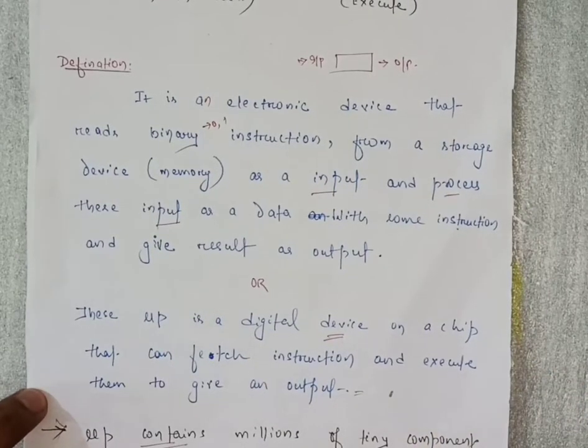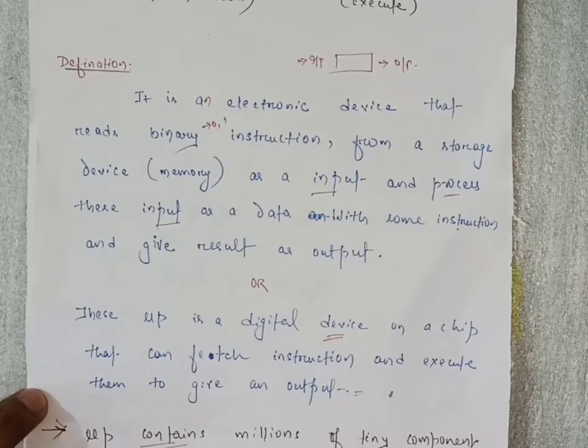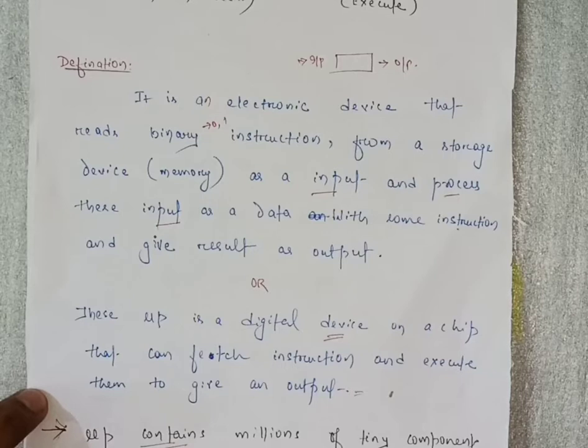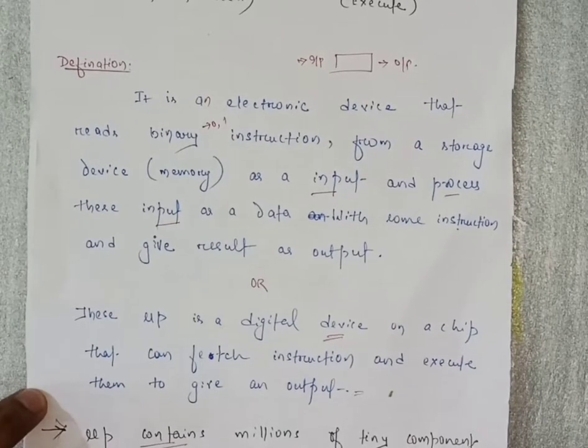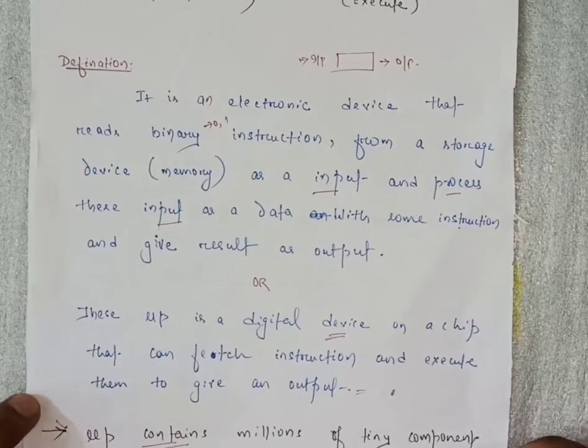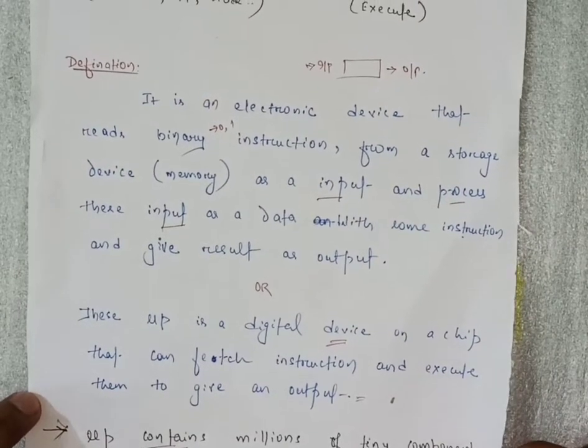Microprocessor contains millions of tiny components, meaning very small parts of size up to 10 to the power minus 6. The components will be transistors, resistors, diodes, and they all will work together simultaneously to perform a desired output.